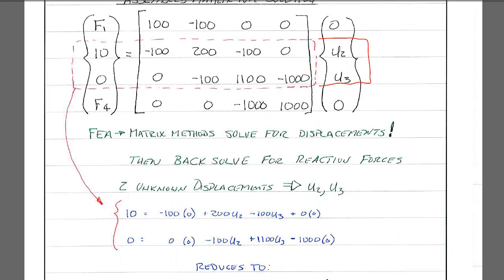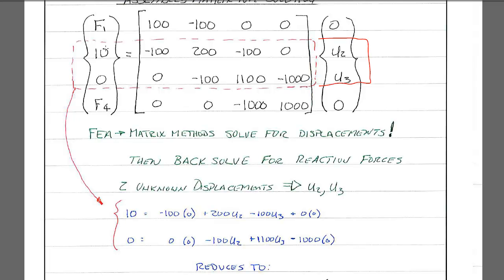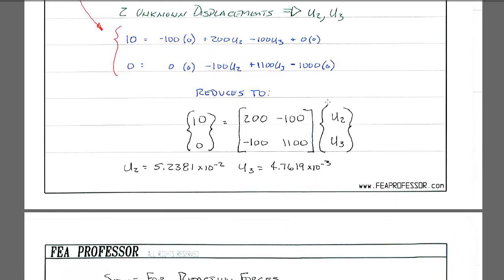So really then, now we have to solve for displacements. Just by looking at this, you can see that these two equations right here, we have two equations and two unknowns. So that's the first step is solving for displacements. So we just plug this in. Of course, the computer would use another technique, but here you could use Gauss elimination, several different methods. So we have 10 equals negative 100 times 0, 200 times u2, minus 100 times u3, and 0 times 0. So that's this equation. Here's the second equation. And so this reduces to this form. And from this form, you can solve it directly. u2 is equal to 5.2381 times 10 to the negative 2. Displacement at node 3 is 4.7619 times 10 to the negative 3.